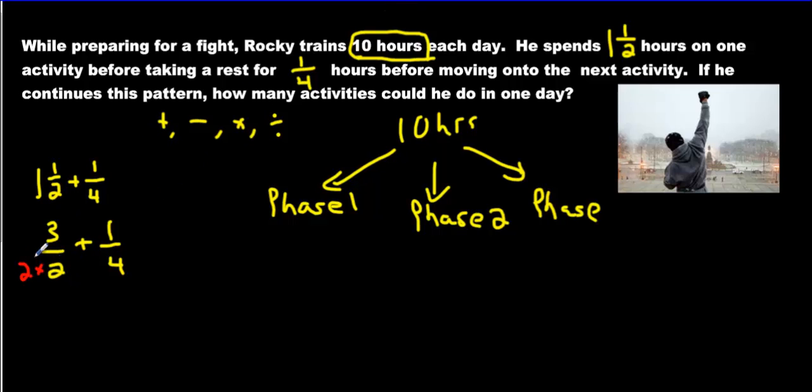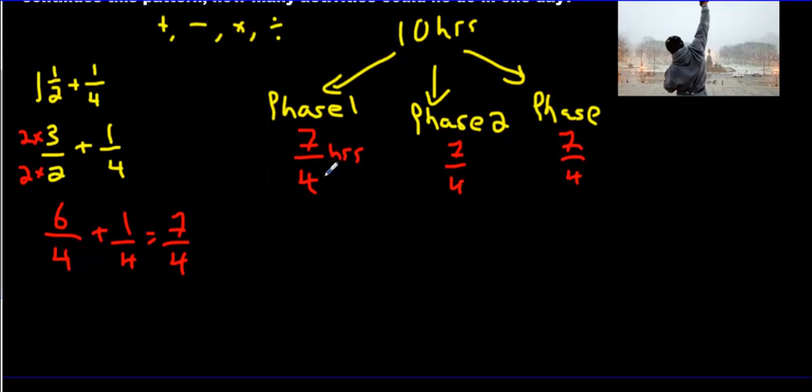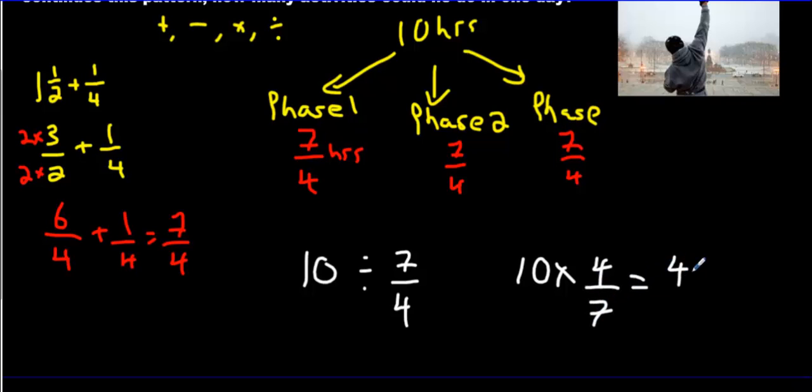Common denominators because it's adding. And that's going to make 6 over 4 plus 1 over 4. That's 7 over 4, guys. So each phase is going to be 7 fourth of an hour, which is almost 2 hours. And then the next one is going to be 7 fourth and the next one. So what we're doing is we're taking 10 hours and we're breaking it into groups of 7 over 4. We have 10 divided by 7 over 4. And that will tell us how many times he can repeat this. So we're going to go 10 times 4 over 7. That's going to make 40 over 7, which is...